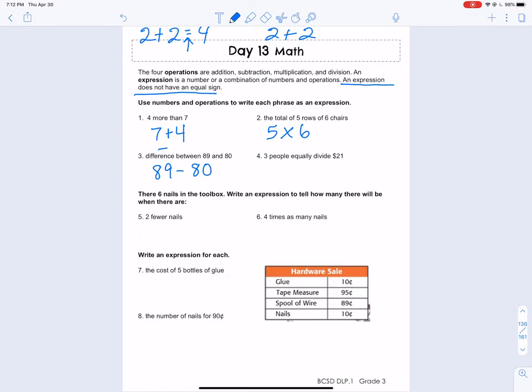And finally, number four, three people equally divide. Okay. It even has the word divide in there for us. So you already know what to do. 21 divided by three. Or if you want to, you can also write it like this. Okay. But you're not going to write the answer. You just leave it.